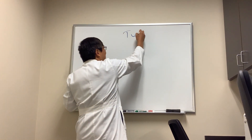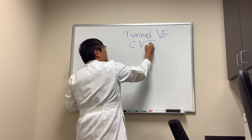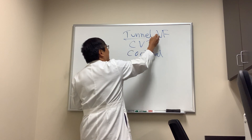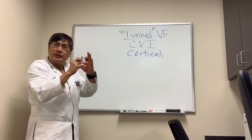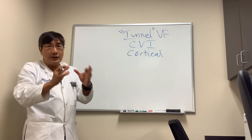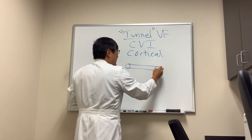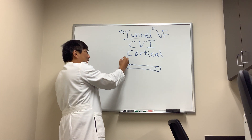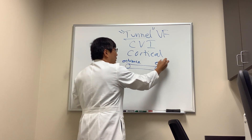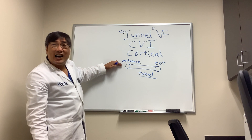Someone wanted to know about how tunnel visual fields could occur in someone who has cortical visual impairment or cortical blindness. The first thing you need to know is that even though they call it 'tunnel' when it's a constricted field, you really shouldn't call it a tunnel unless it's non-organic. The reason is a tunnel has an entrance hole and an exit — like the Lincoln Tunnel — and the size of the entrance is the same as the exit. That is non-physiologic.